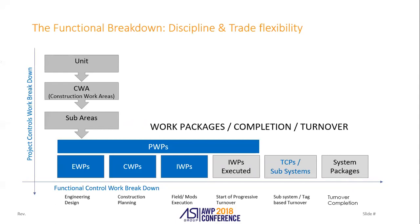As you go down the left-hand side of this representation, you start looking at it from project management — project controls and your work breakdown structure — going from units to a construction work area to sub-areas. What AWP is all about is breaking down that work breakdown into EWPs, CWPs, IWPs, supported by the procurement work packages. Along the bottom you can see it goes functionally through engineering, construction planning, execution, progressive turnover — somewhere along the line you go from bulk construction to turnover by system.